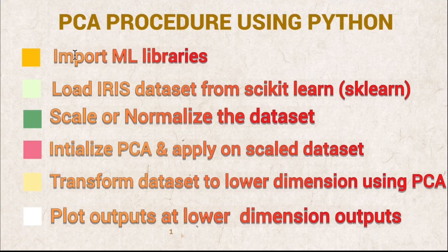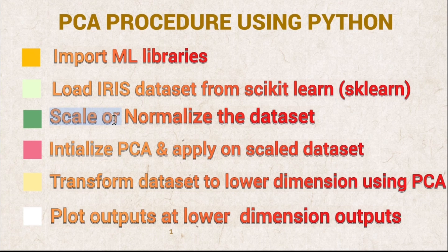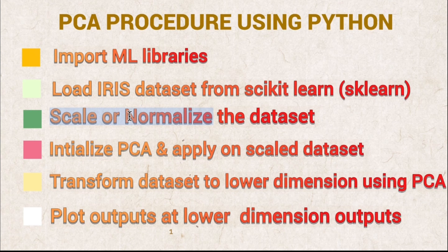For the practical session, we are going to use Google Colab. First, we will import the required machine learning libraries, then load the iris dataset from sklearn.datasets. Once we have the dataset with 150 observations and four features, we are going to scale or normalize this dataset. Normalization or scaling can be done using a standard scaler, or we can write a program to subtract the mean from each value and divide by standard deviation. Once we get the scaled dataset, we apply principal component analysis on it.